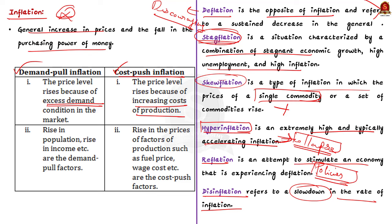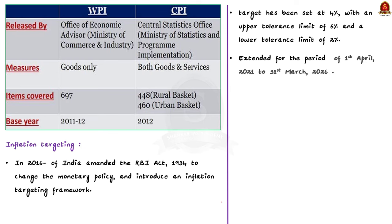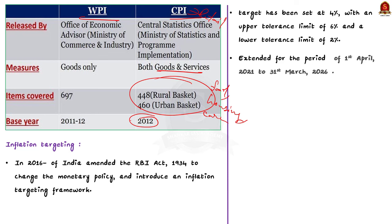In India, inflation is primarily measured by two indices: WPI (Wholesale Price Index) and CPI (Consumer Price Index). CPI measures retail inflation by tracking price changes of common goods and services — a market basket — with a base year of 2012. Types of CPI calculated include CPI for industrial workers, agricultural laborers, rural laborers, and urban/rural combined. The first three are compiled by the Labour Bureau, while the fourth is compiled by the National Statistical Office. On 1st April 2014, RBI adopted CPI as the primary inflation indicator. WPI has a base year of 2011-12, captures average movement of wholesale prices, and is primarily used as a GDP deflator. WPI records only basic prices, excluding taxes, rebates, and transport charges. WPI data is compiled by the Department of Promotion of Industry and Internal Trade. The key difference: WPI covers goods only, while CPI covers both goods and services.